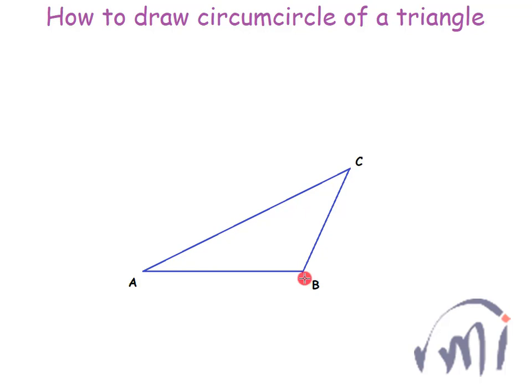So the procedure of drawing a circumcircle of a triangle is you draw the perpendicular bisector of two adjacent sides of a triangle, that means any two sides of a triangle. So let us first draw the perpendicular bisectors of AB and BC.